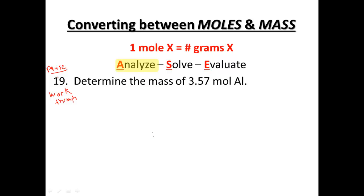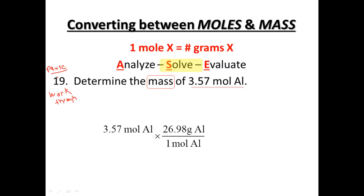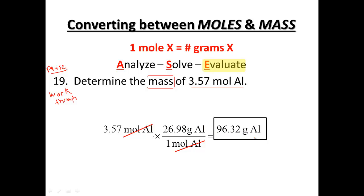Using the ACE model — Analyze — determine the mass of 3.75 moles of aluminum. Starting with 3.75 moles of aluminum, to go from moles to grams, moles go on the bottom: one mole, and from the periodic table 26.98 grams of aluminum on top. Moles cancel moles, leaving grams. Multiplying 3.75 × 26.98 gives about 96.3 grams of aluminum. With 3 significant figures, the answer is 96.3 grams of aluminum from 3.75 moles of aluminum.